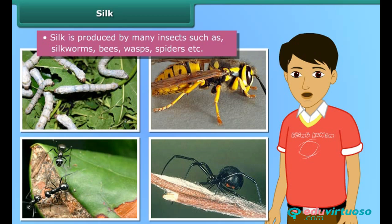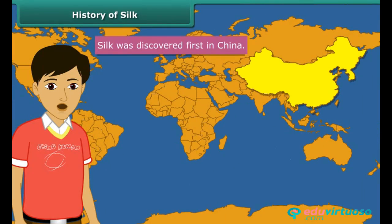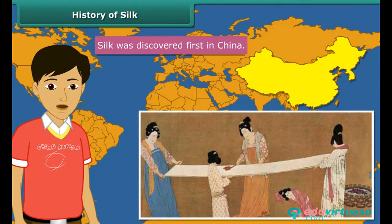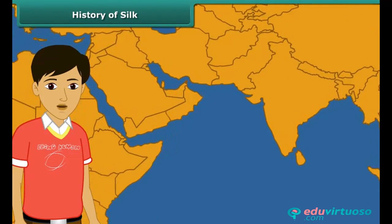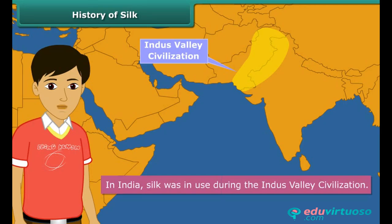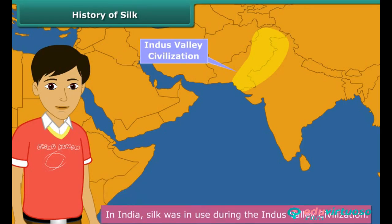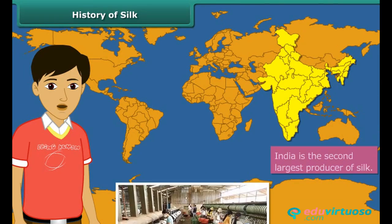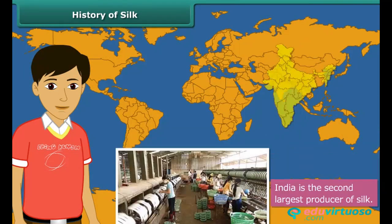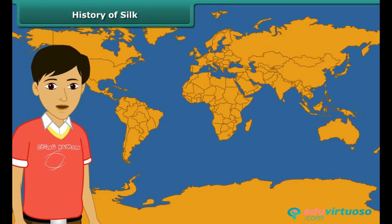Silk was first discovered in China by a Chinese emperor as far back as 3500 BC. In India, there is evidence that silk was in use during the Indus Valley civilization. Today, India is the second largest producer of silk — the bulk of it produced in Karnataka. India is also the largest consumer of silk in the world.